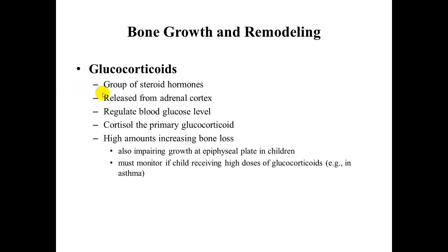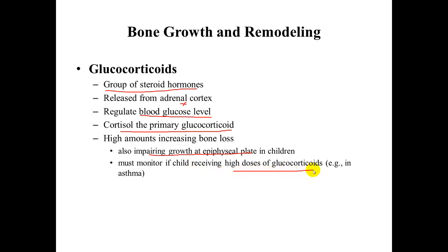Glucocorticoids are a group of steroid hormones released from the adrenal cortex, found on the kidneys, that help regulate blood glucose levels. Cortisol is the primary glucocorticoid. In high amounts, it increases bone loss and impairs growth of the epiphyseal plate in children. For example, children receiving high doses of glucocorticoids for conditions like asthma must have their bone loss monitored.